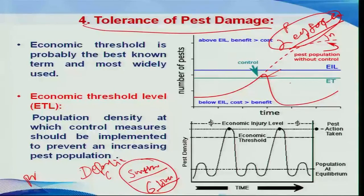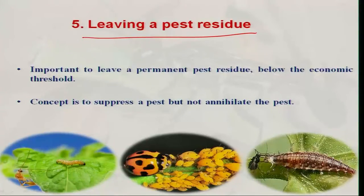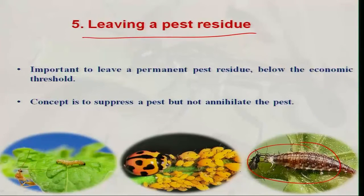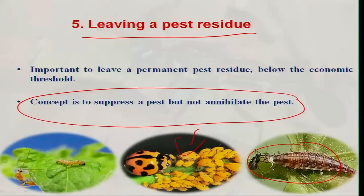Everybody should know the economic threshold level of different pests and what extent of pest damage is going to interfere with yield. We should leave some part of pest residue so that one can increase the multiplication of natural enemies like parasitoids and predators, thereby reducing the pest population below the economic threshold. That is why the concept of pest management is to suppress the pest, but not eradication of pests.